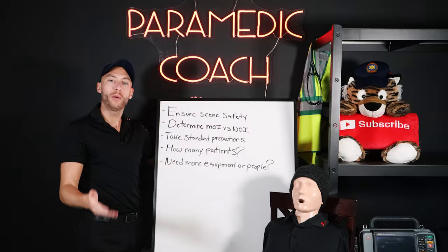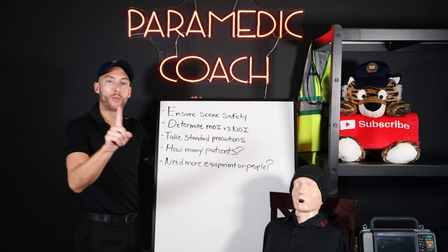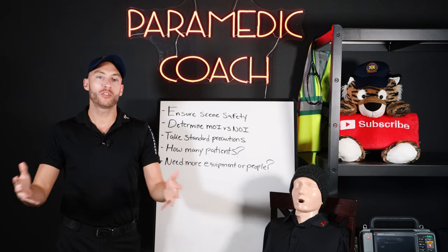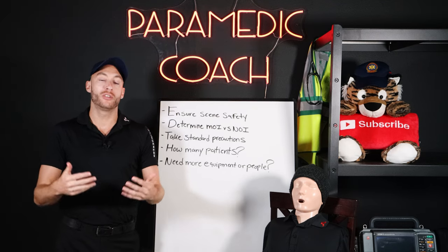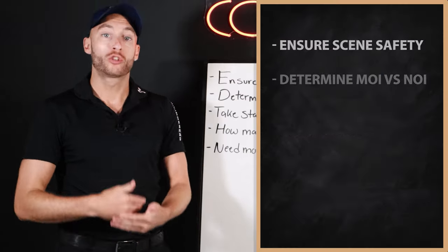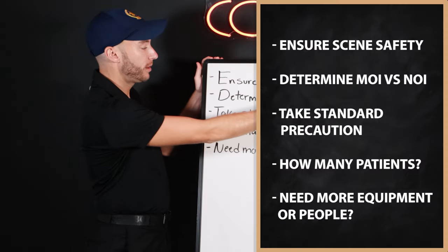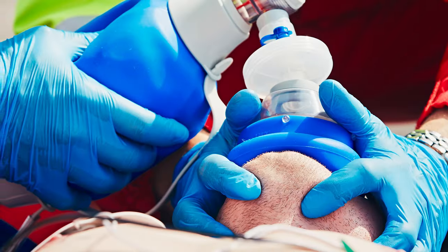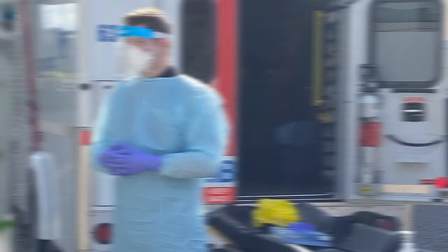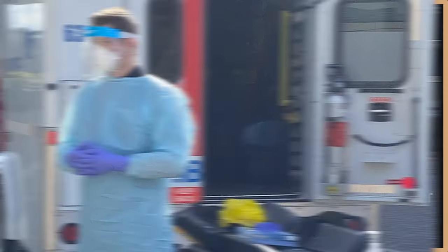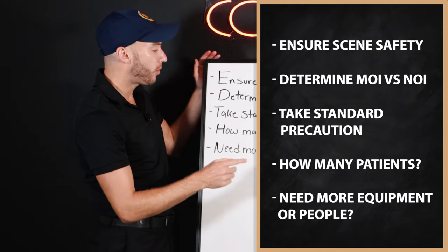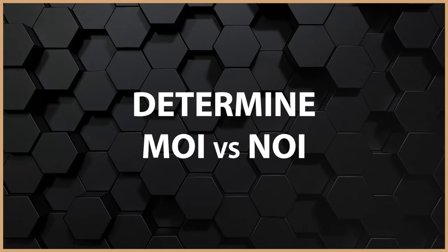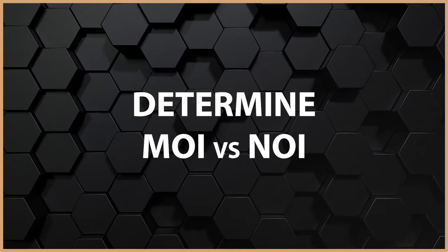Before we get to help our patient, we first have to ensure the scene is safe — either the scene has been cleared by the police department, or dispatch information shows the scene is safe for EMS to enter. With that, we take standard precautions: we have gloves, we may have a mask, we may have a gown, depending on the information we get on the call. Next, we determine the NOI and MOI.